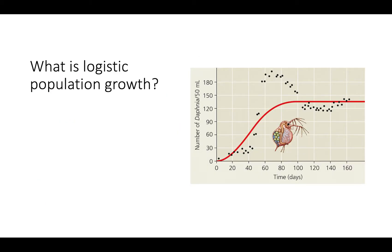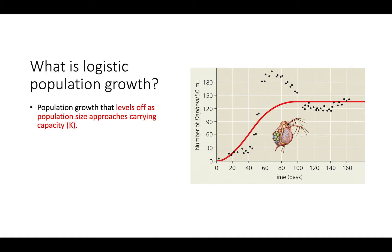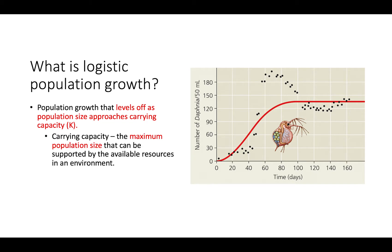Logistic growth is population growth that levels off as the population size reaches carrying capacity. Carrying capacity is the maximum population size that can be supported by the available resources in an environment. So if an environment can only support 10 individuals, then the carrying capacity of that environment would be 10.